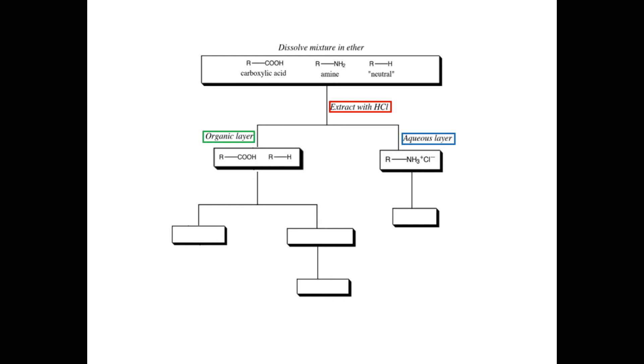Our amine is a base, and it reacts with the HCl, and it becomes the conjugate acid. So it becomes a charged species, which now will go into the aqueous layer. So now in your aqueous layer, you have your amine, which is protonated. And in your organic layer, your ether, you have your carboxylic acid and your neutral compound.